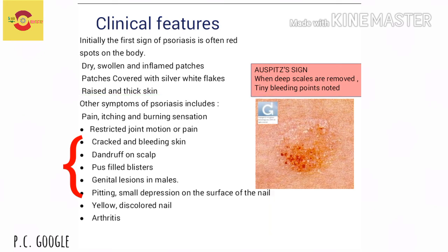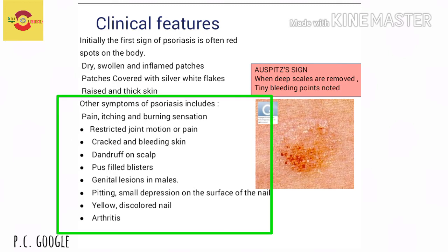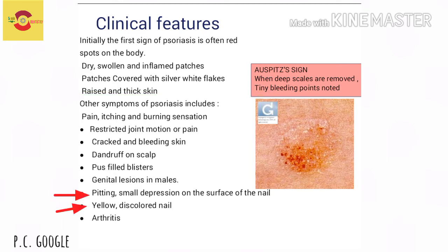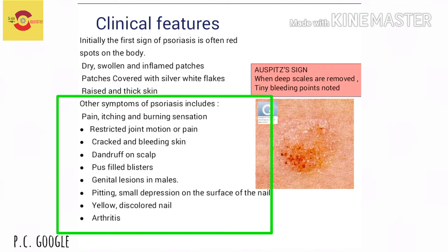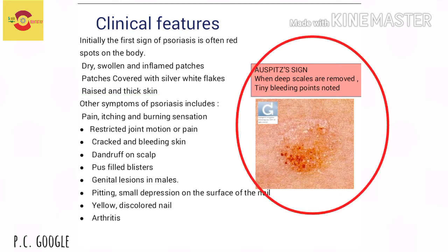Cracked and bleeding skin is seen; on the scalp, dandruff is common. Pus-filled blisters may appear, and in males, genital lesions are seen. Regarding nails, pitting and small depressions on the nail surface, as well as yellow and discolored nails, can be seen. The Auspitz sign is noted when deep scales are removed and tiny bleeding points appear — a characteristic feature of psoriasis.